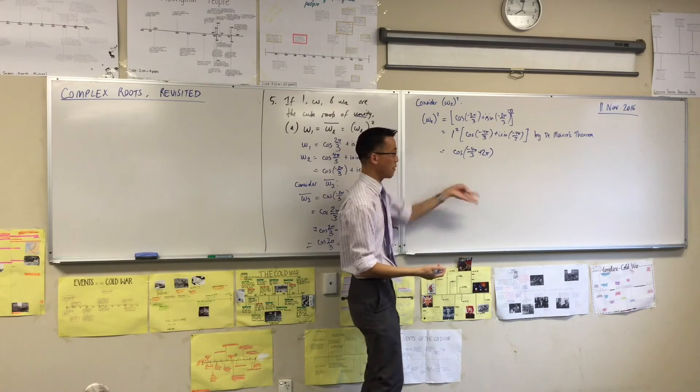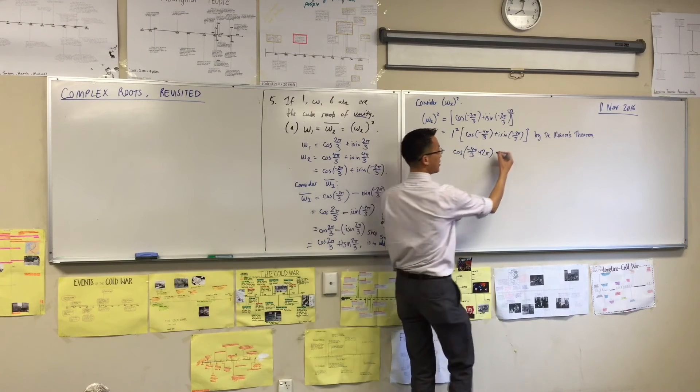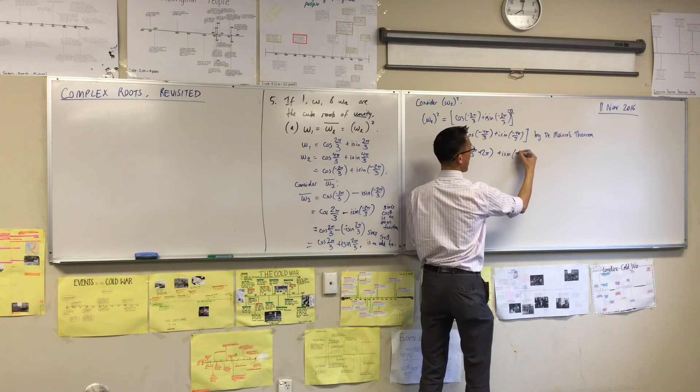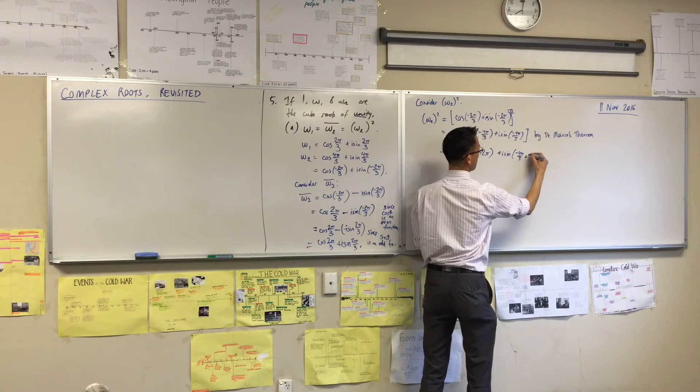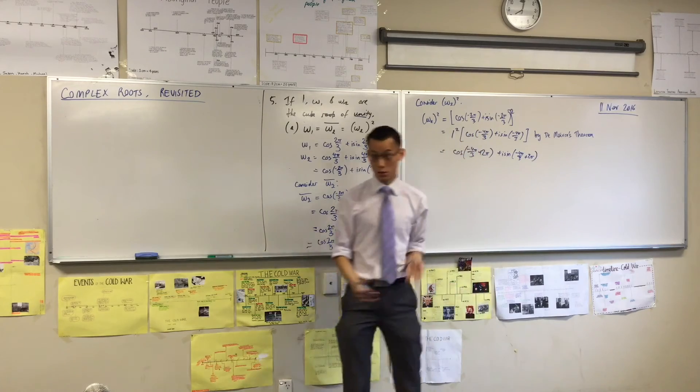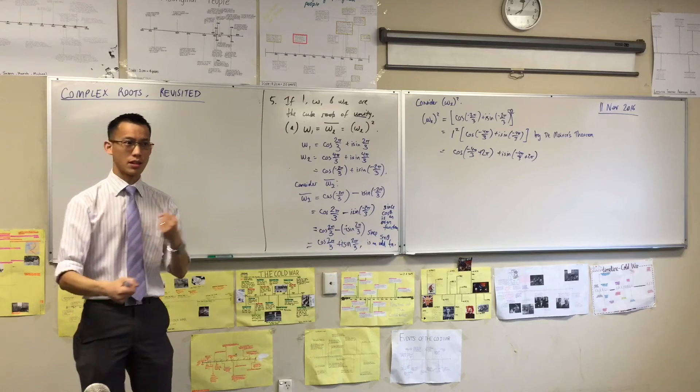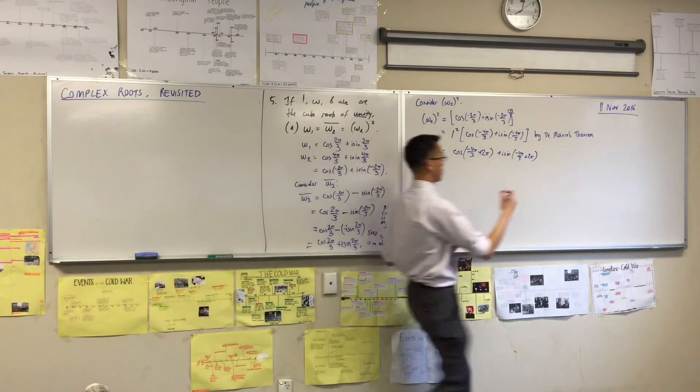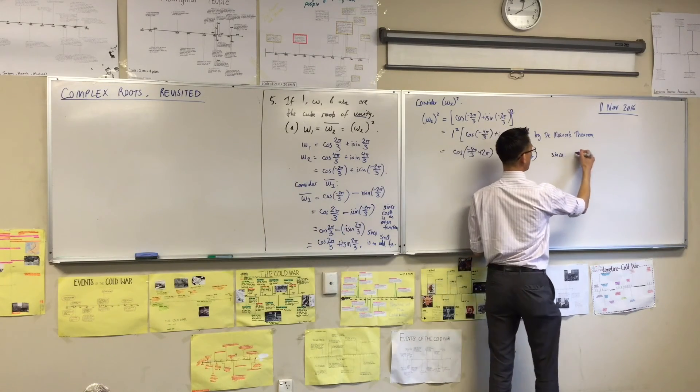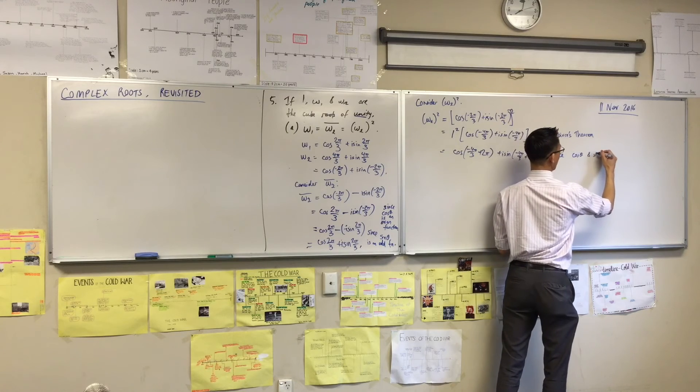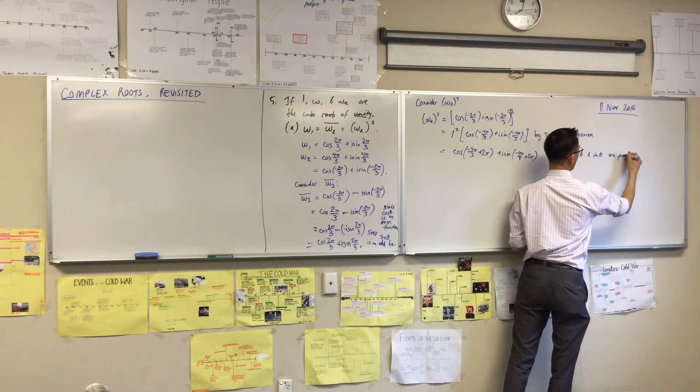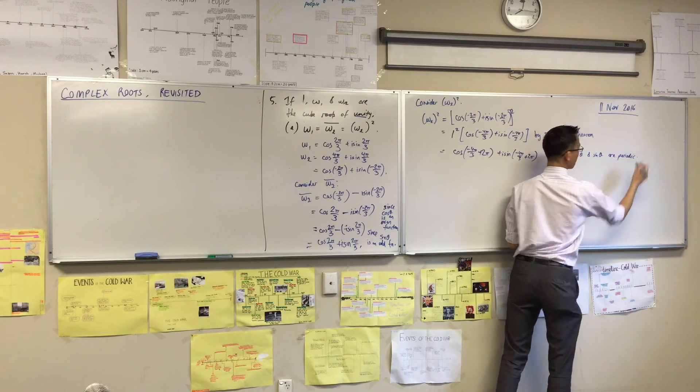You could add 2π or 4π or 6π, whatever you like. It's the same deal with sine. It has the same period. Like that. Do you see what I've done? Owing to the fact that cos and sine are periodic functions.